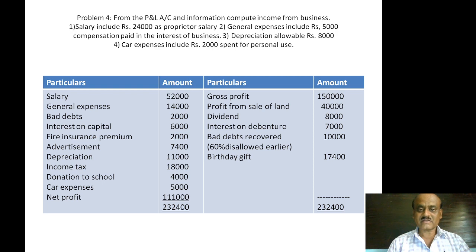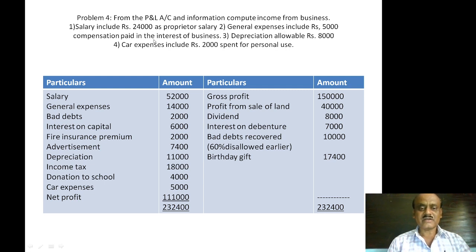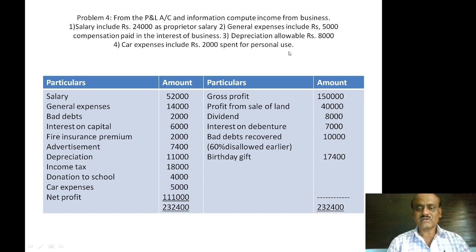The assignment problem involves net profit. From the profit and loss account and information, compute income from business. Information: salary includes Rs.24,000 as proprietor's salary; general expenses include Rs.5,000 compensation paid in the interest of business; depreciation allowable is Rs.8,000; car expenses include Rs.2,000 spent for personal use.